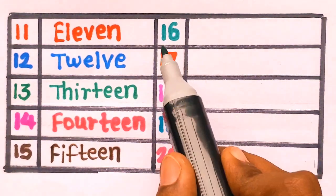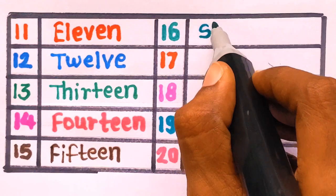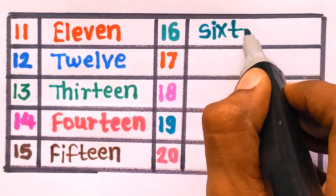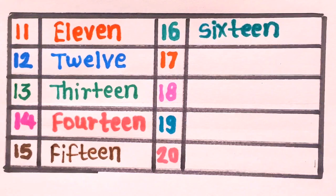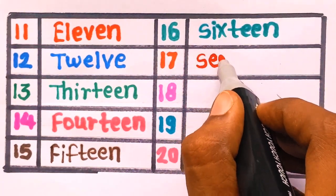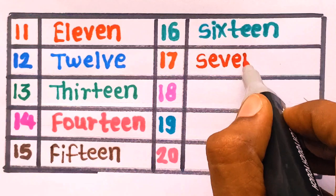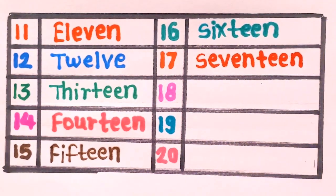Next is 16, 16, S I X T E E N, sixteen, 16, 16. Next is 17, 17, S E V E N T E E N, seventeen, 17, 17.